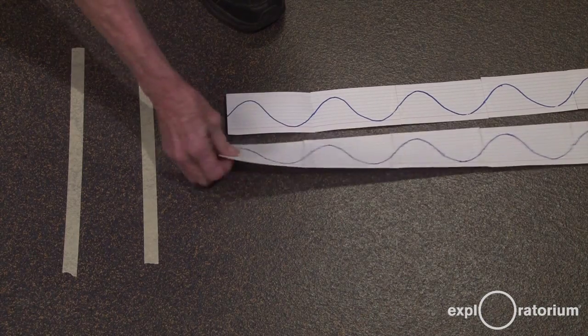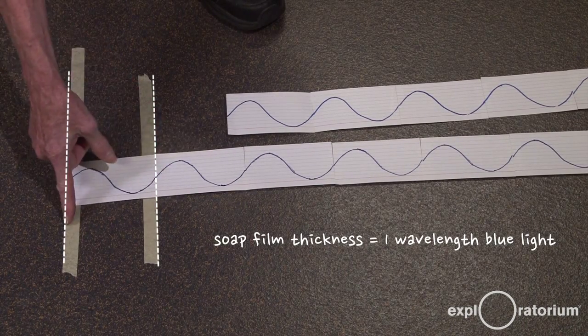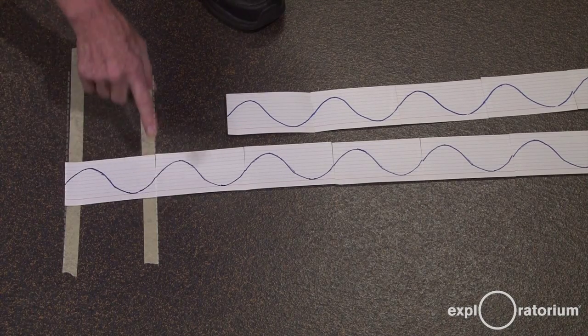The first soap film we're going to investigate, we're going to make it so that it's one wavelength of blue light between the outer edges of both pieces of masking tape.